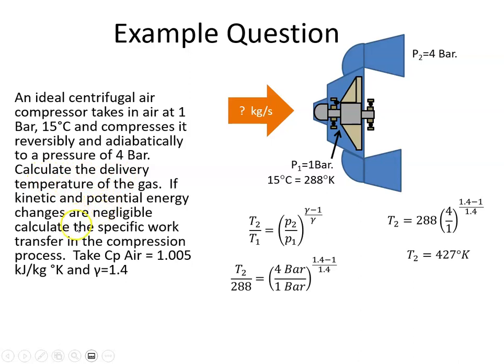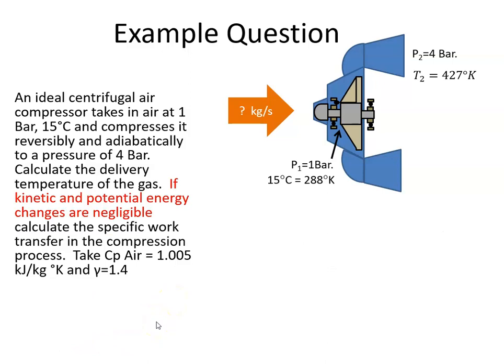We are now asked in the second part to calculate the specific work. So, for an open system, we use the steady-state energy equation. And in the compressor, we're not burning fuel in here, so we're not adding in any heat. And we're told that the kinetic and potential changes are negligible. So that's the kinetic, that's the potential. So they disappear.